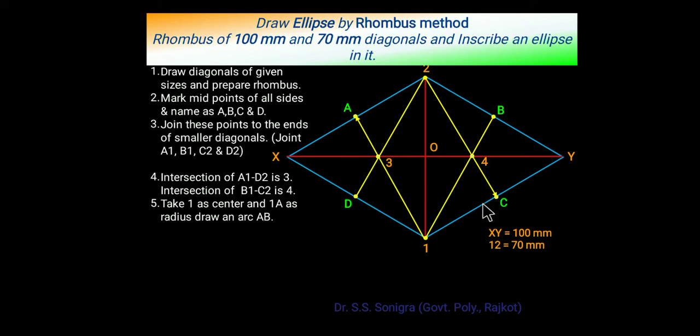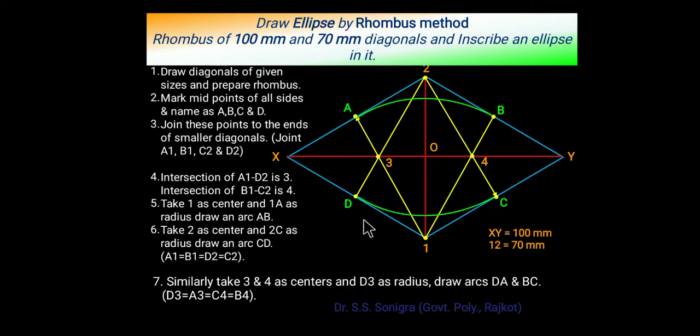Now take 1 as a center, 1A as a radius, draw an arc. So this is arc 1A to 1B - both distances are same. Similarly, 2 as a center, 2C as a radius, draw an arc up to D.